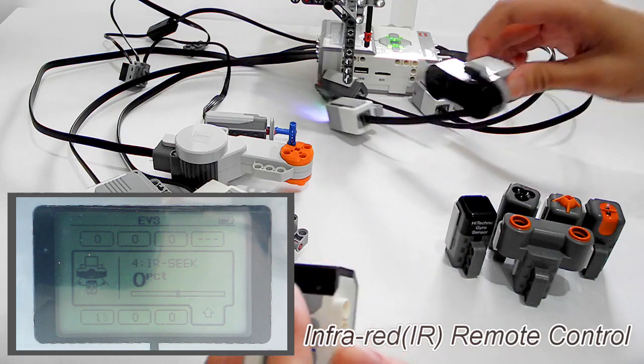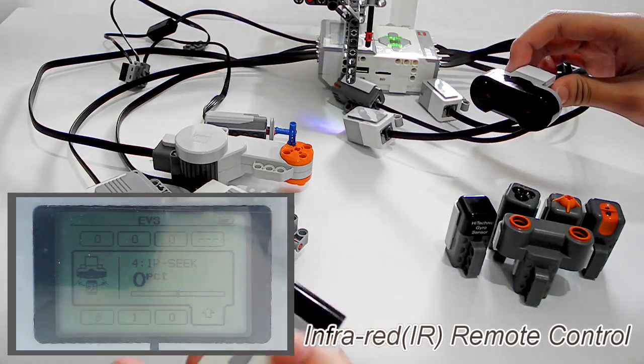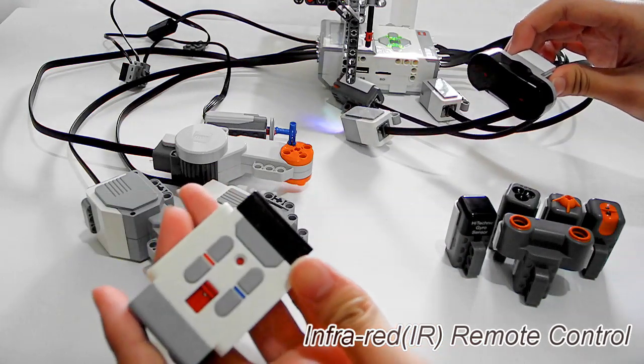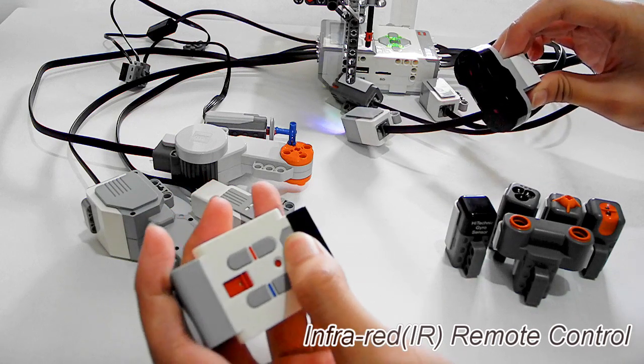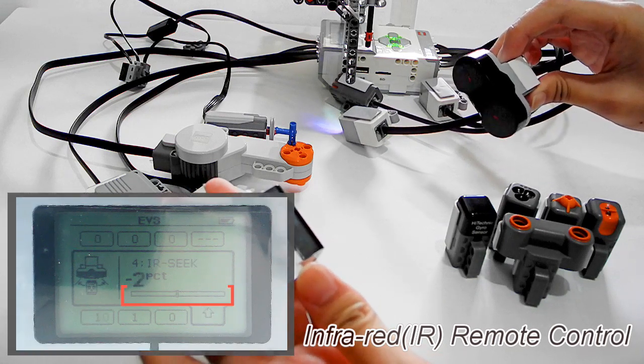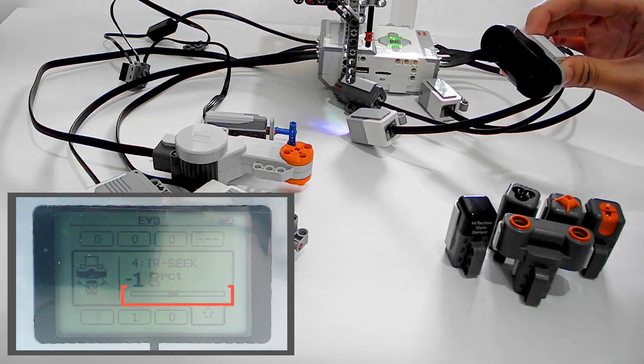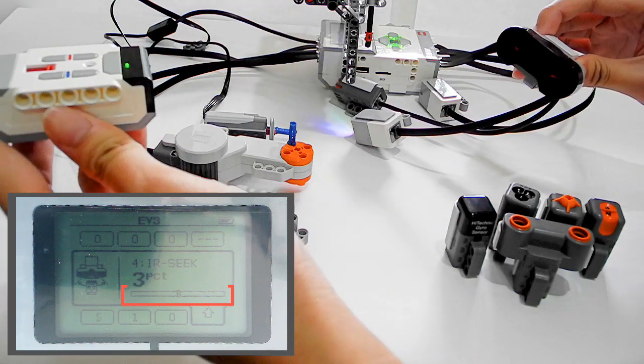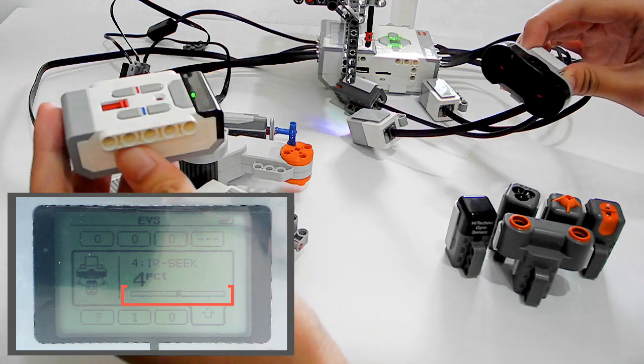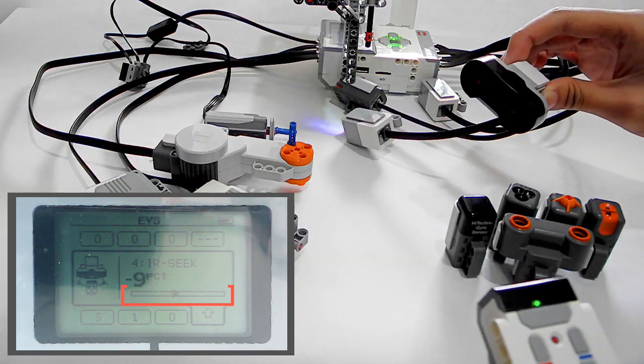And the second mode is used to seek this infrared remote control direction. Now this remote is not turned on so it shows 0, and I press this button, you can see the number is moving.